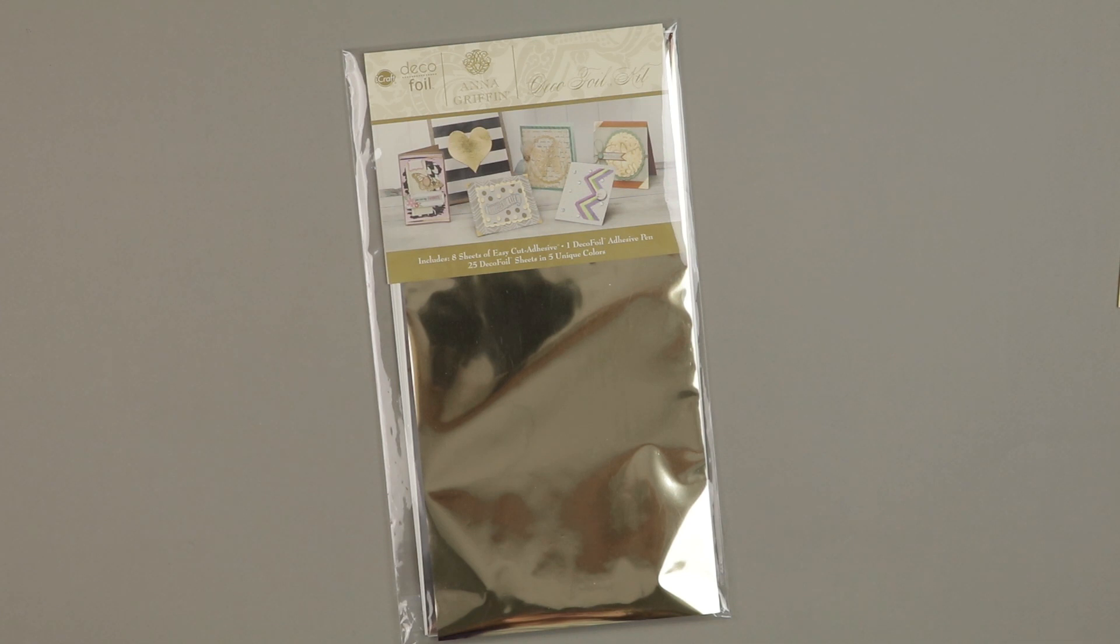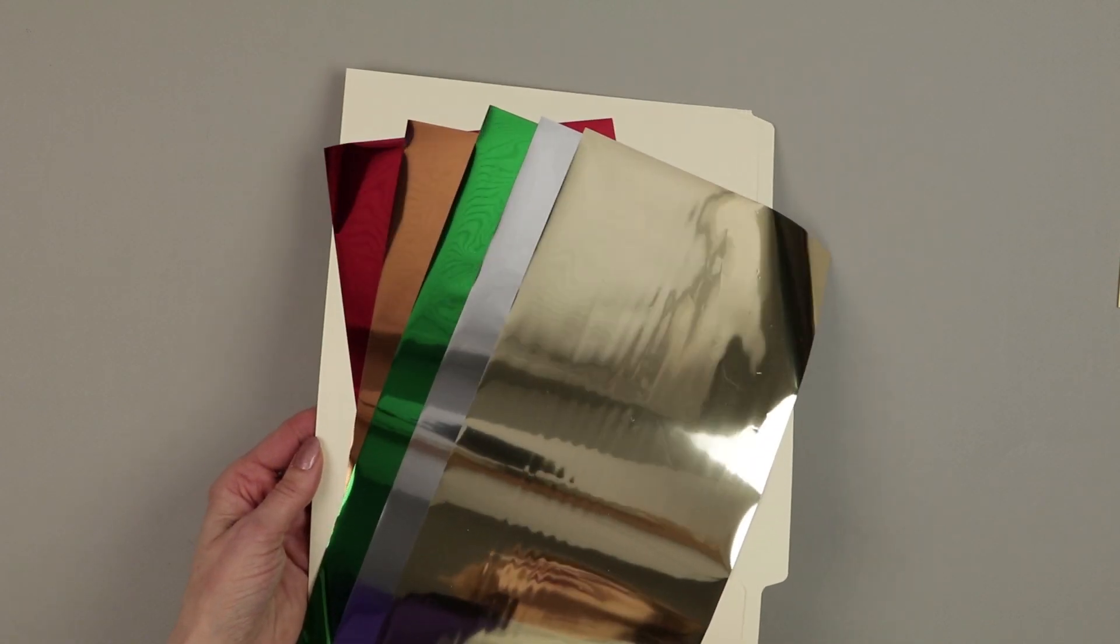You get eight 6x12 sheets of easy cut adhesive, an adhesive pen, and an instruction sheet. The colors of foil are beautiful. I absolutely love them.